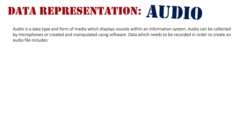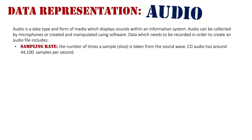Data which needs to be recorded in order to create an audio file includes the sampling rate, which is the number of times a sample or slice is taken from a sound wave. The most common largest type of sampling rate available is CD audio, which has about 44,100 samples per second. That's a lot of samples per second.